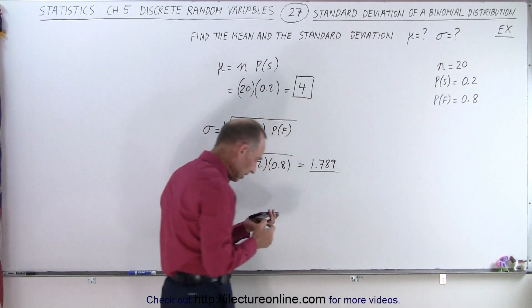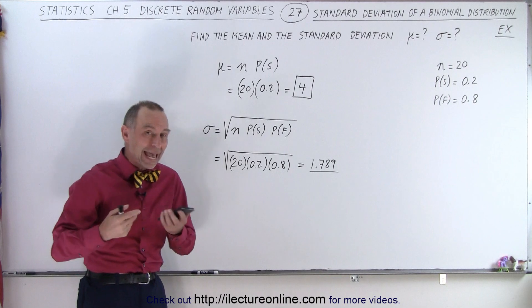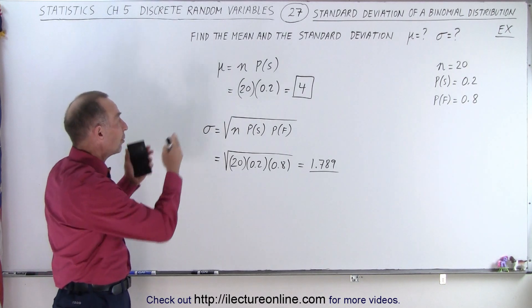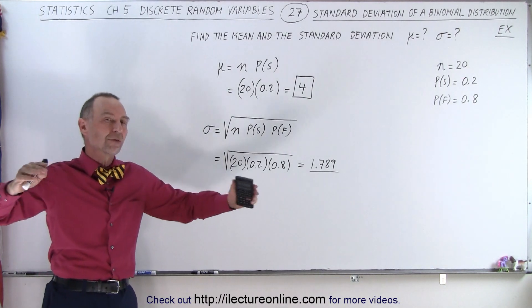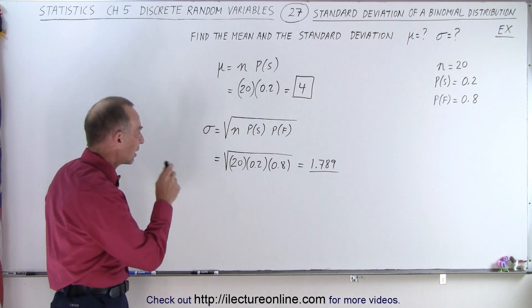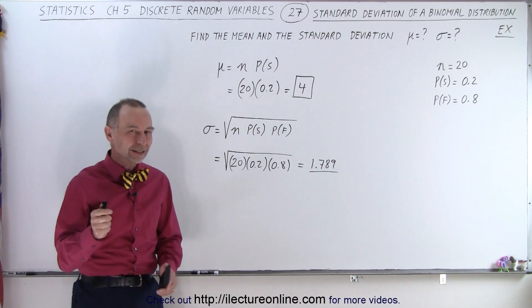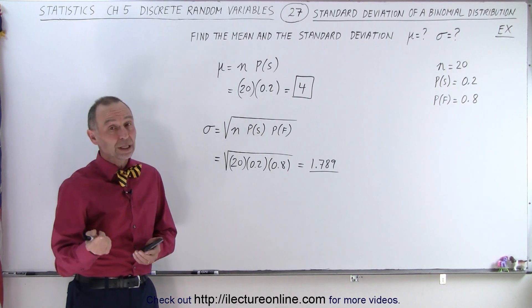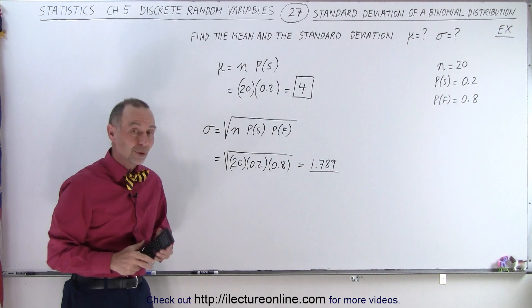Typically what we'll see in the next chapter is that we end up adding and subtracting the standard deviation from the mean to see what the distribution of expected values is. But we're not there yet, that's for the next chapter. Here at least, now we know how to calculate the mean and the standard deviation when we're dealing with the binomial distribution.